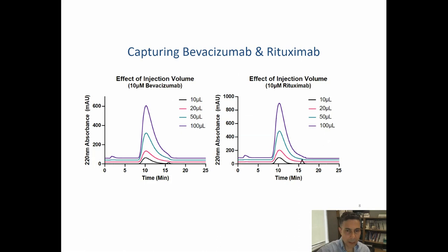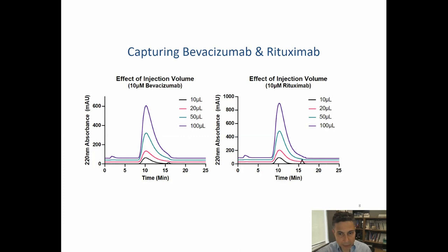The first injections on this column were to prove it can capture antibodies. We started working with pure antibodies like bevacizumab and rituximab. In both cases, increasing injection volumes at a constant concentration resulted in an increase in the height of the elution peak, showing very efficient capture of these antibodies.